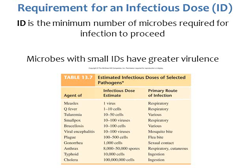Even if a microorganism gets into one of those portals of entry, you still need a certain number of those cells to get in — that's called an infectious dose or ID. The infectious dose is the minimum number of microbes required for the infection to proceed to actually make you sick. Microbes with small infectious doses have greater virulence. For example, measles requires only one virus to enter your respiratory tract, whereas cholera requires a lot of cells to enter the body before disease develops.